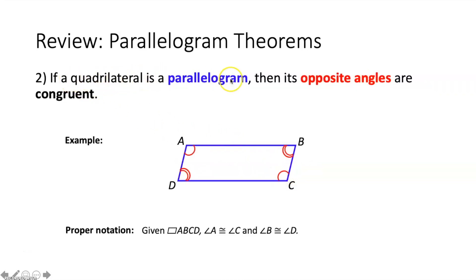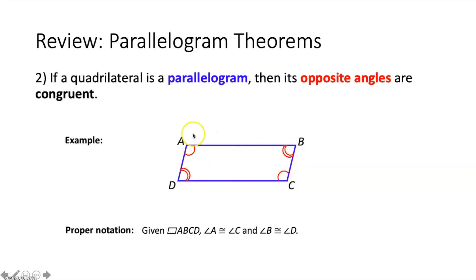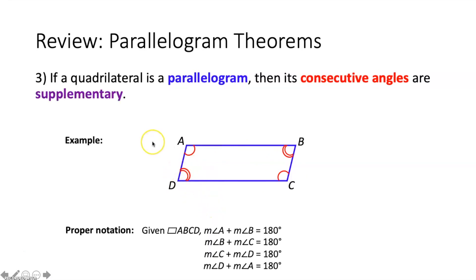The second parallelogram theorem says if a quadrilateral is a parallelogram then its opposite angles are congruent. So if we know that quadrilateral ABCD is a parallelogram, then we know the opposite angles must be congruent: angle A must be congruent to angle C, and angle B must be congruent to angle D.